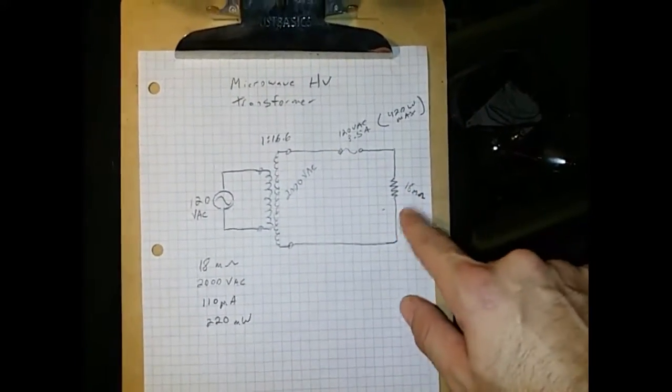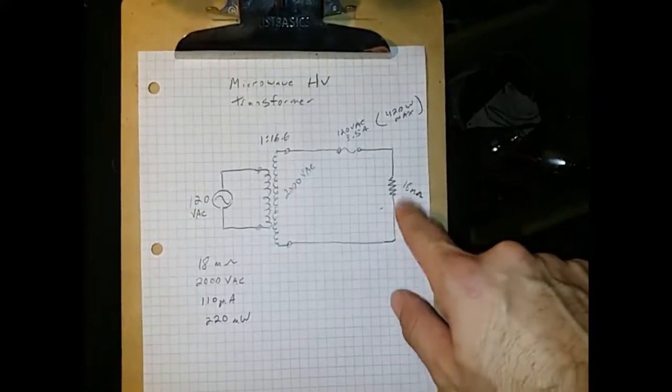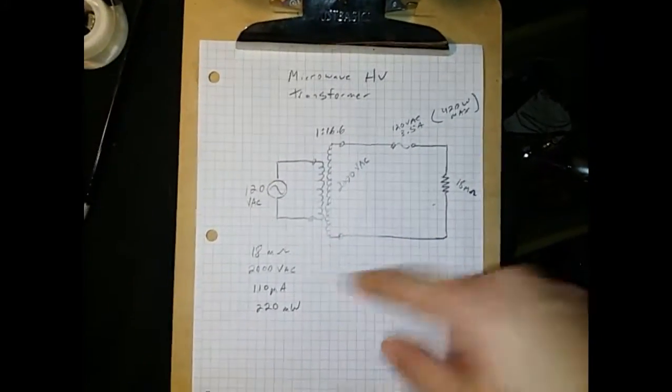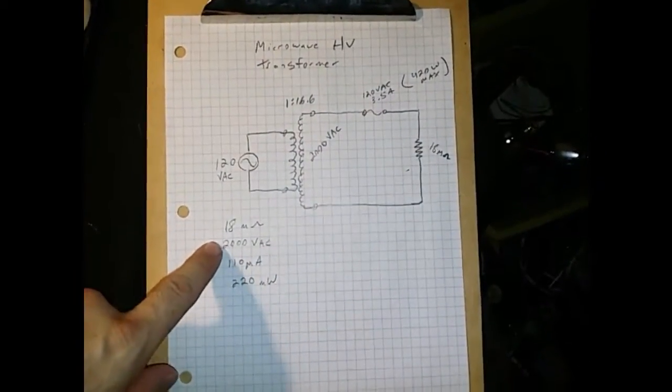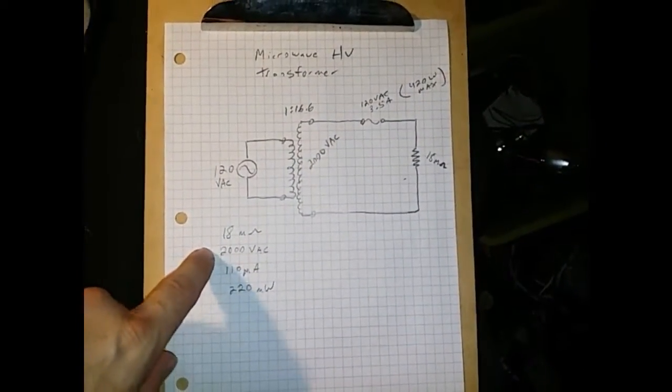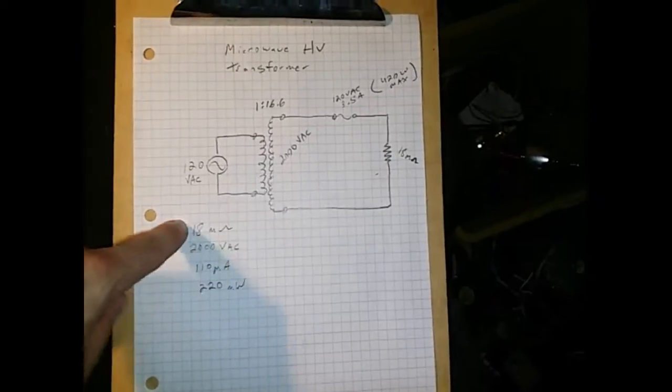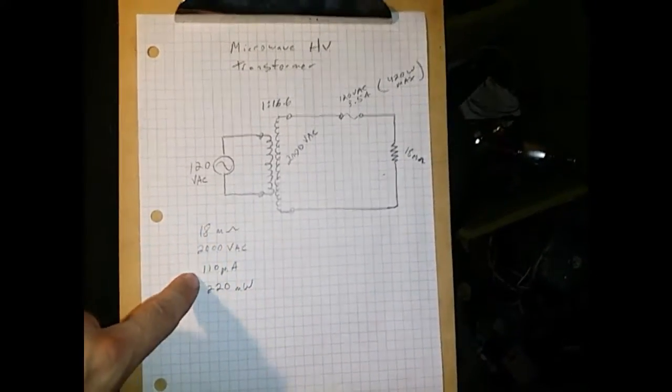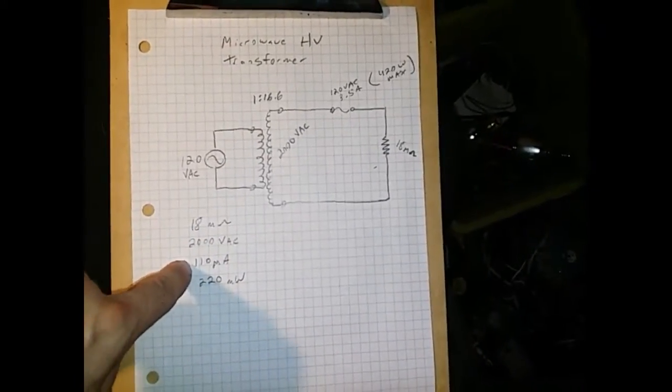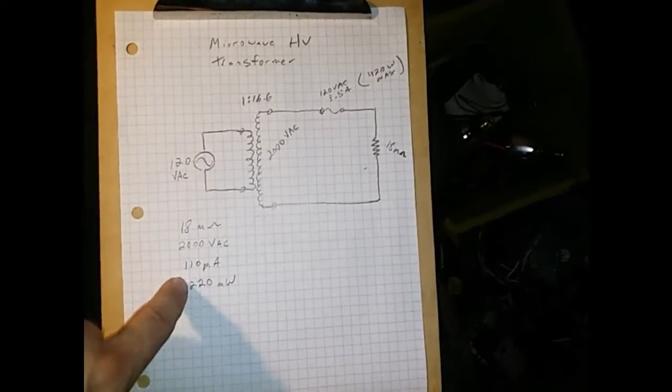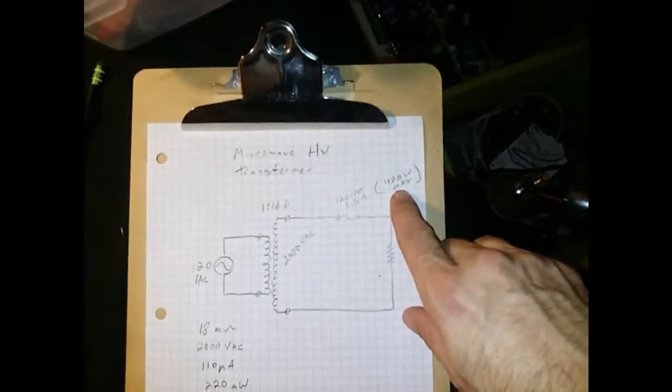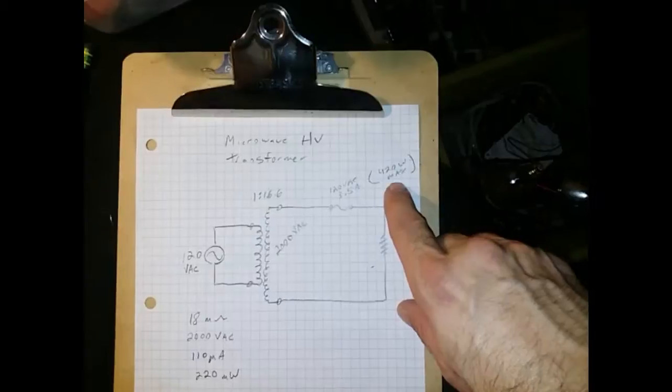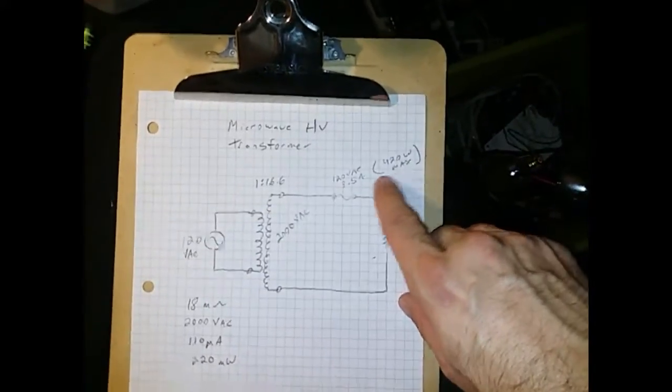And I put a combination of a couple of resistors making it 18 megaohm resistance load. The calculations would be 2000 volts divided by 18 megaohms, which would yield 110 microamps through the circuit. And that would yield 220 milliwatts, so well under our current rating, which is max current through the system would be 420 watts.